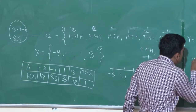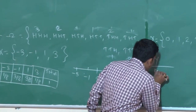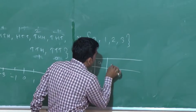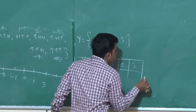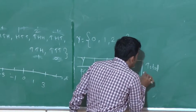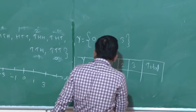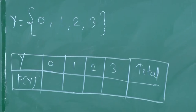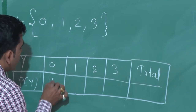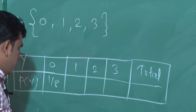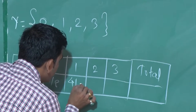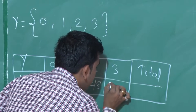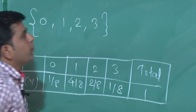So over Y, it is having the points 0, 1, 2, 3. Probability of 0 is 1/8, probability of 1 is 4/8, probability of 2 is 2/8, probability of 3 is 1/8; total probability is 1.